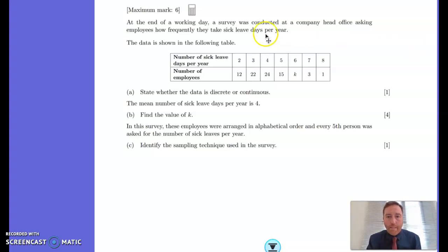We've got some data here in this table. We've got the number of sick leave days per year. So 12 people were taking about 2 sick days, 22 were taking 3 sick days, 24 taking 4 sick days, etc.